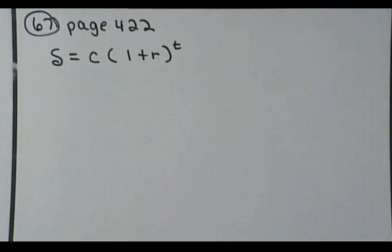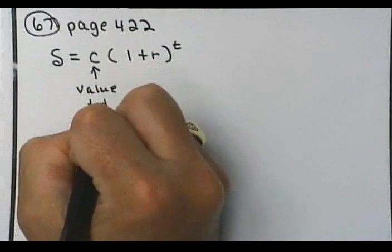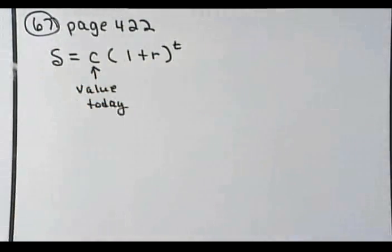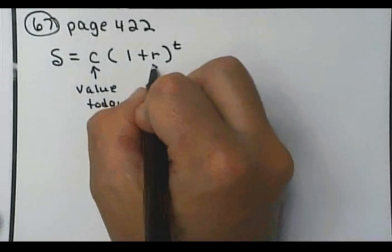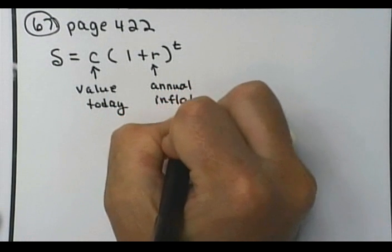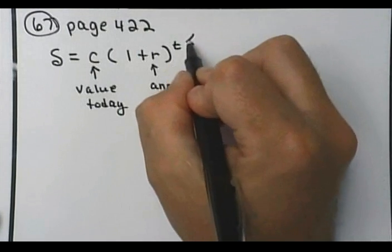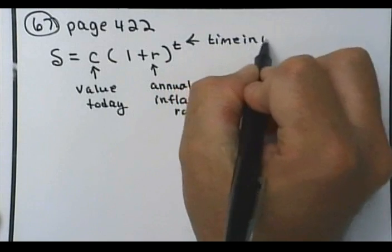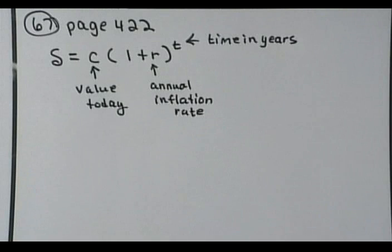And what the s represents here, well let's go through it. C is the value today. The r here represents the annual inflation rate. t represents time in years. So what is s going to end up giving you? s gives you the inflated value t years from now.